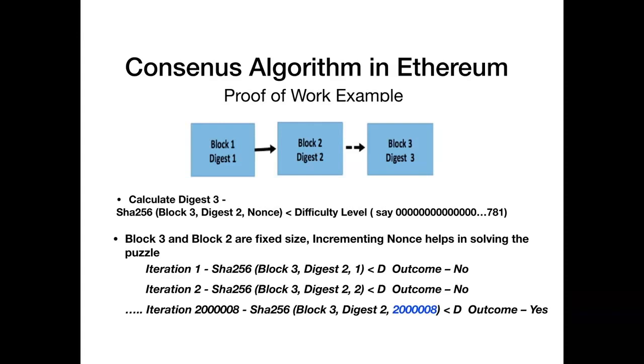Now the node that solves this equation propagates this nonce value of 2 million and 8 to all the other nodes in the network for verification. All the other nodes would simply take this nonce value and verify it is indeed less than the difficulty level. Now the other nodes just need one step to verify this equation with least computing power.